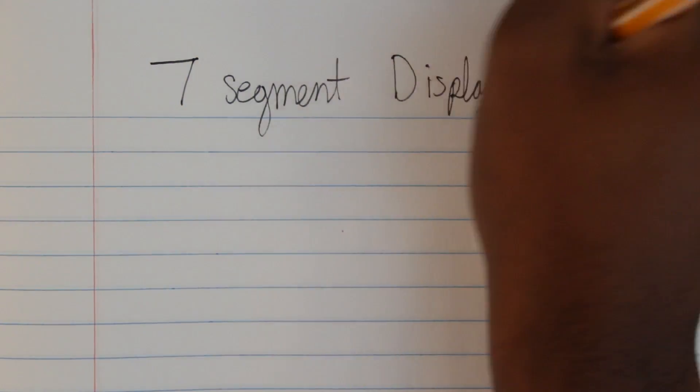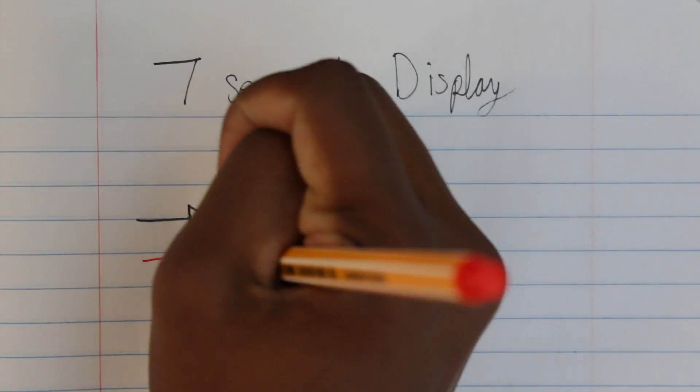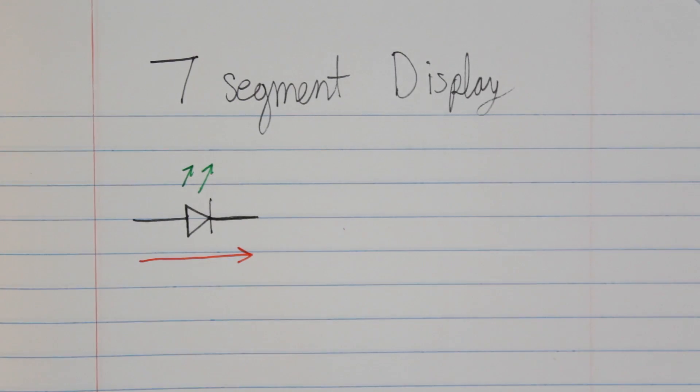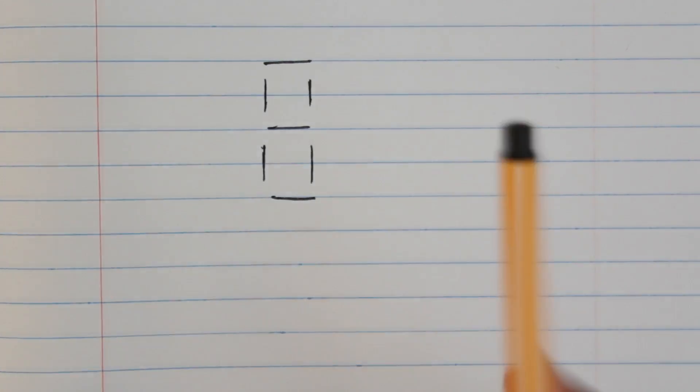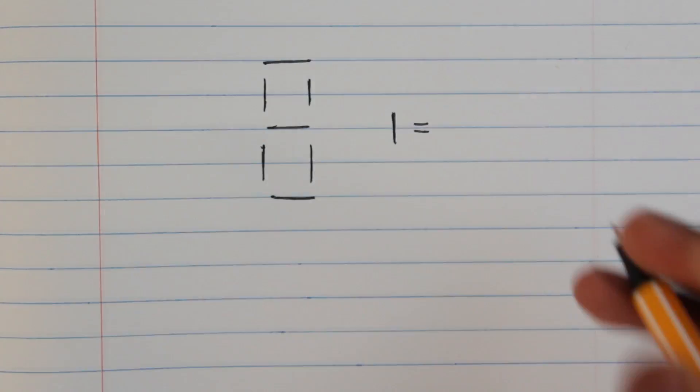Let's talk about this. We have an LED like this and current flows this way, and when it does, the LED turns on. We all know this. Now, for the seven segment display, we have this structure. Each one of these bars is an LED.